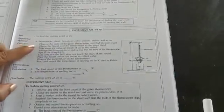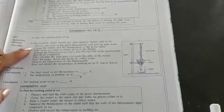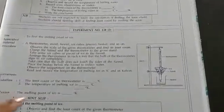Procedure has to be written in points and in past tense. I observed the scale of the given thermometer. I did this etc.